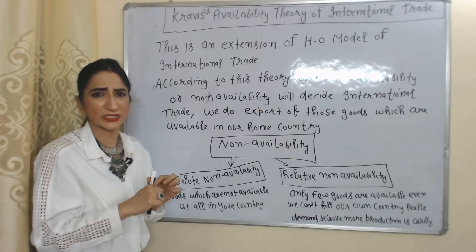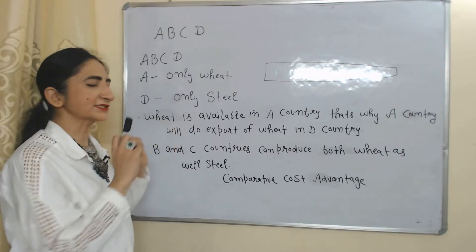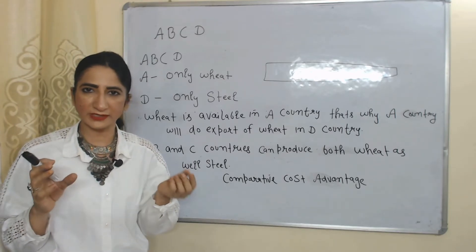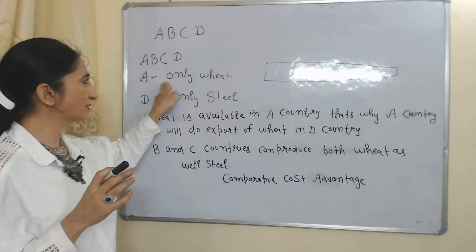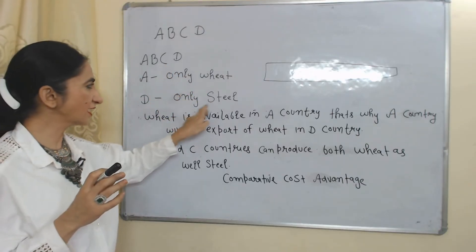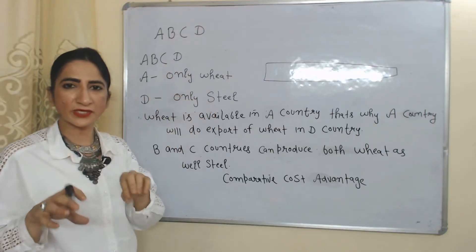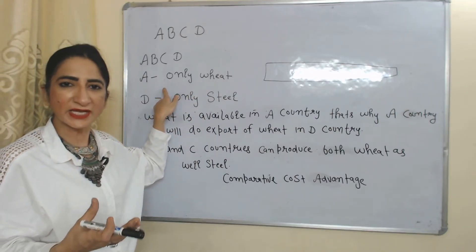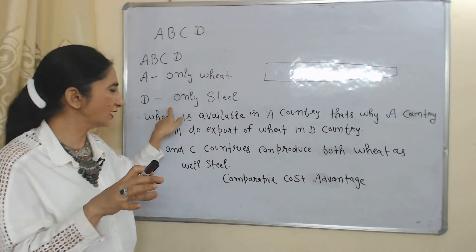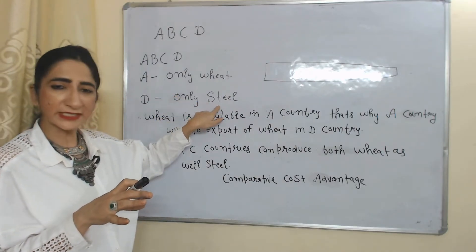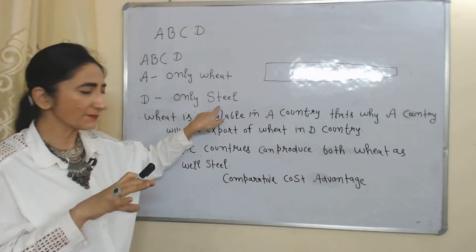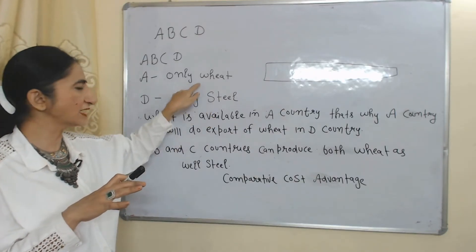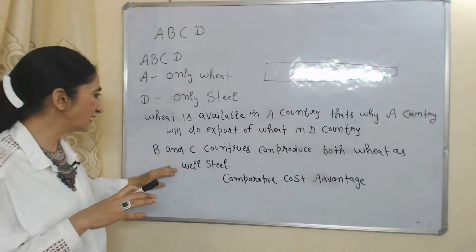Now we understand this theory with the help of an example. Suppose there are four countries: A, B, C, and D. Country A can produce only wheat and country B can produce only steel. According to this theory, wheat is available in country A, so A will export wheat to country D. On the other hand, steel is available in country D, so country D will export steel to country A.